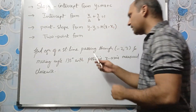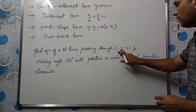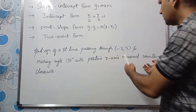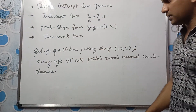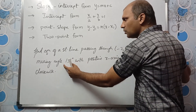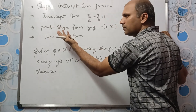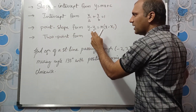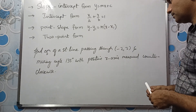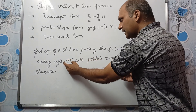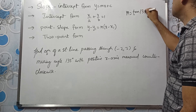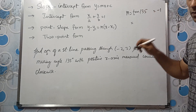Problem: Find the equation of a straight line passing through (-2, 3) and making an angle of 135 degrees with the positive x-direction measured counterclockwise (anticlockwise). Point and slope are given, so we use point-slope form: y - y1 = m(x - x1). tan(135°) = tan(90° + 45°) = -cot(45°). Since 135° is in the second quadrant, tan is negative, so tan(135°) = -1.